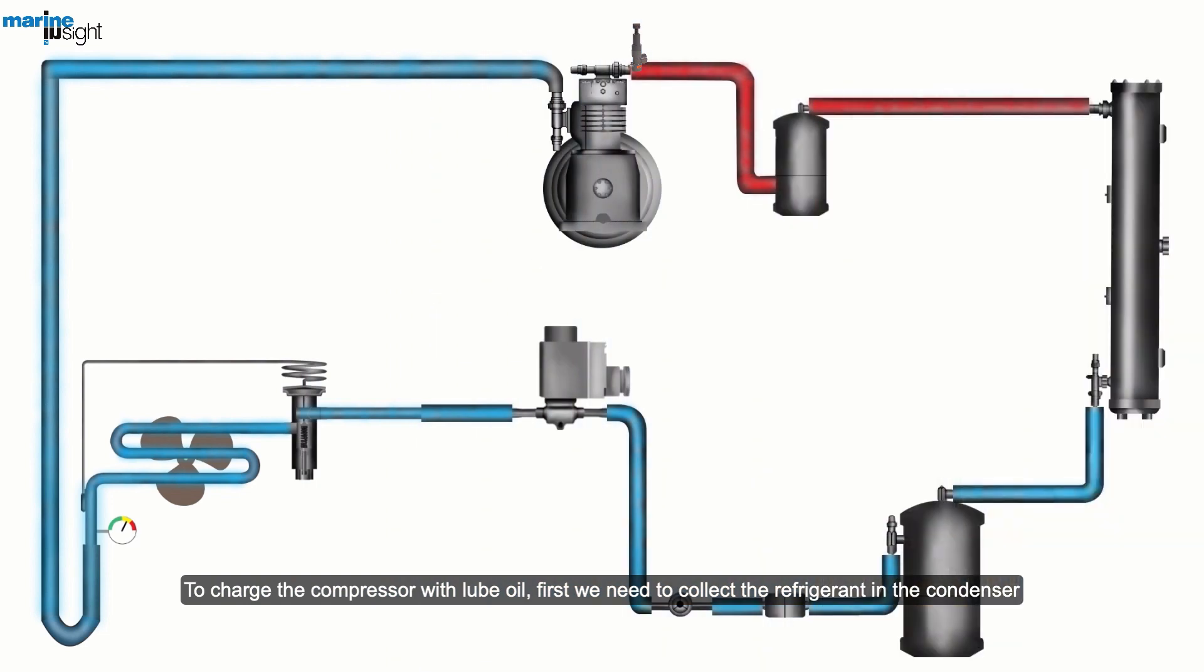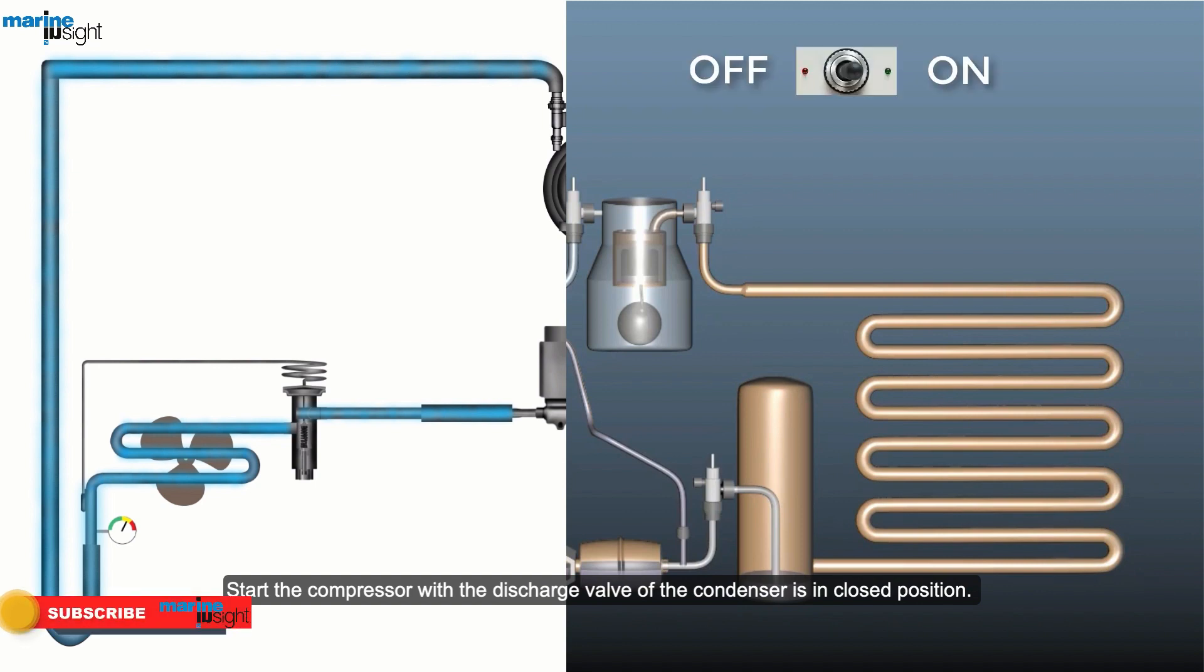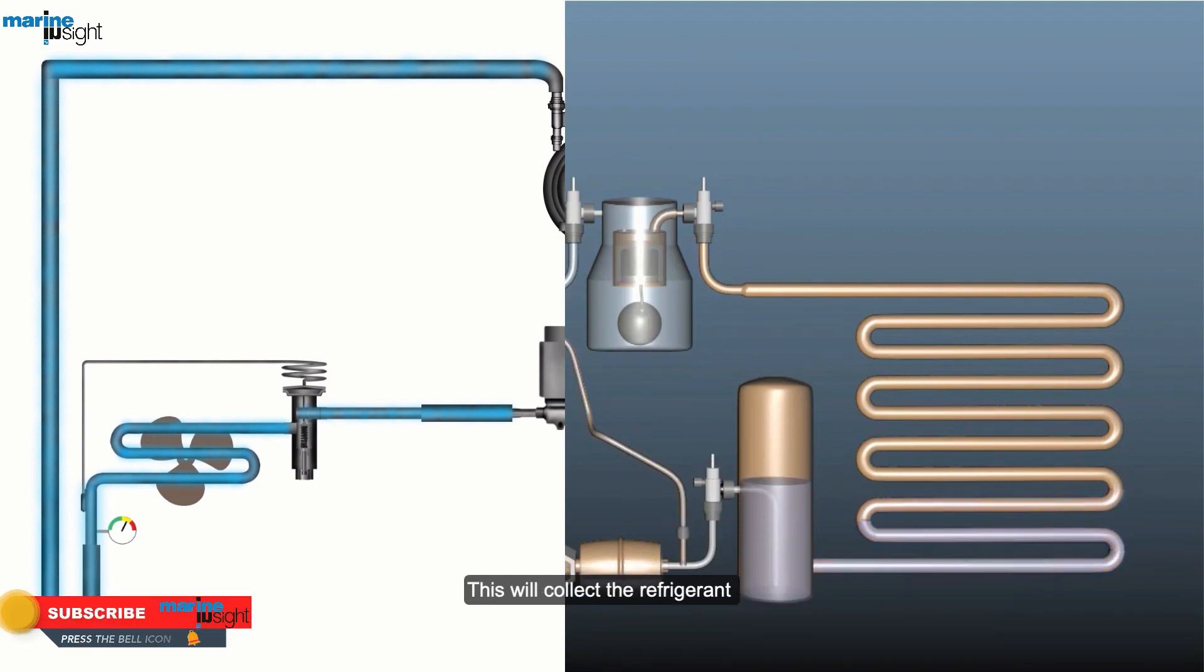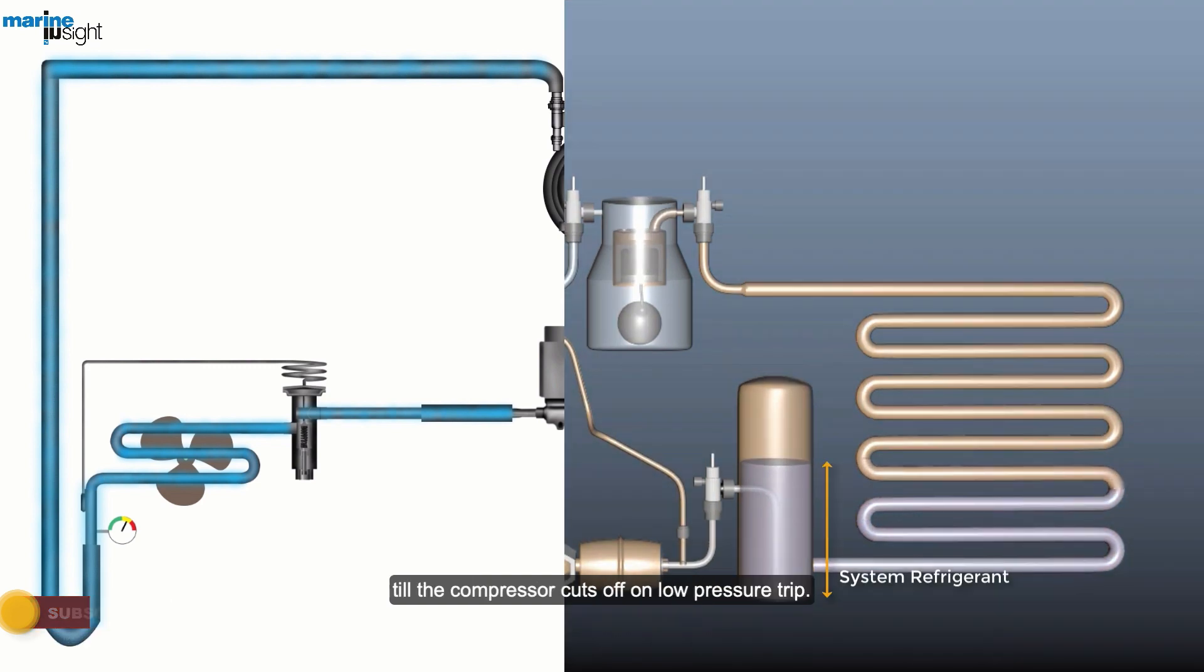To charge the compressor with lube oil, first we need to collect the refrigerant in the condenser. Start the compressor with the discharge valve of the condenser in closed position. This will collect the refrigerant till the compressor cuts off on low pressure trip.